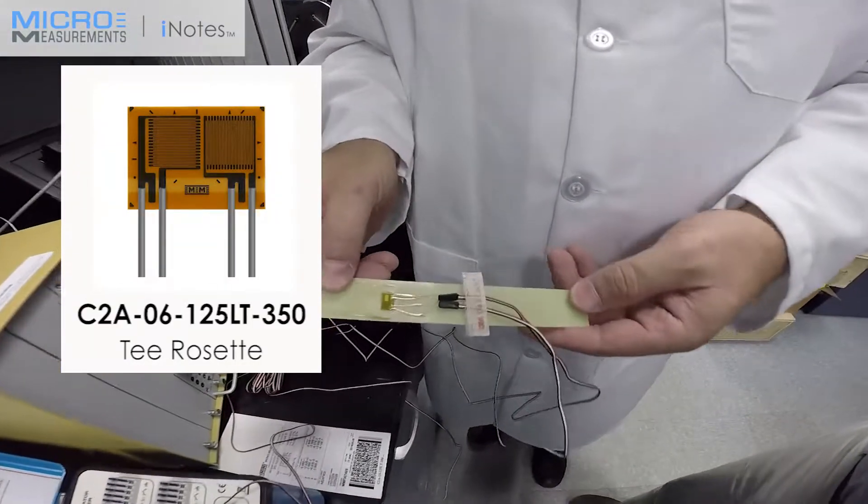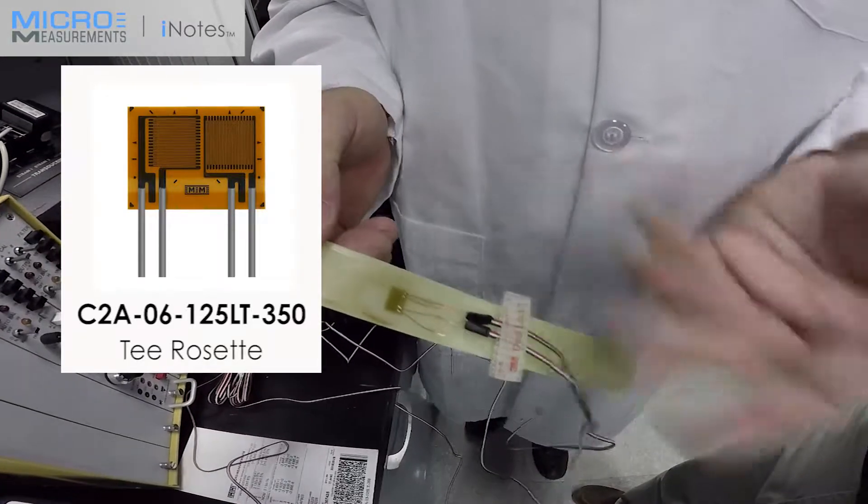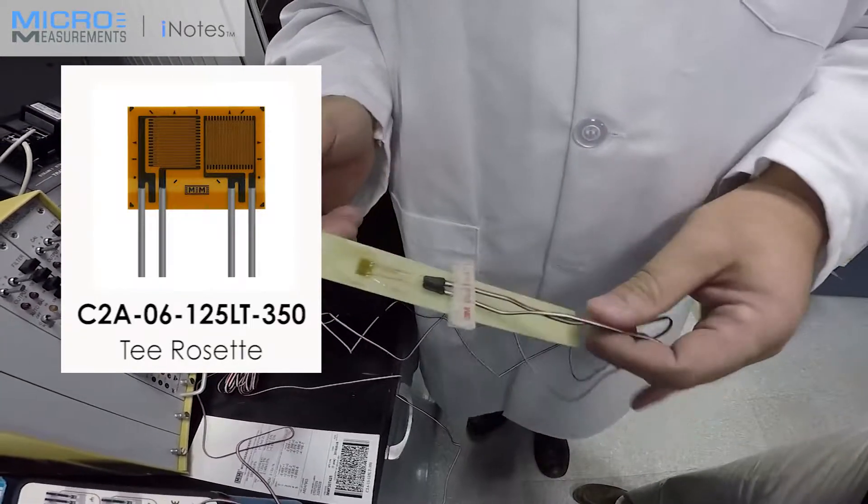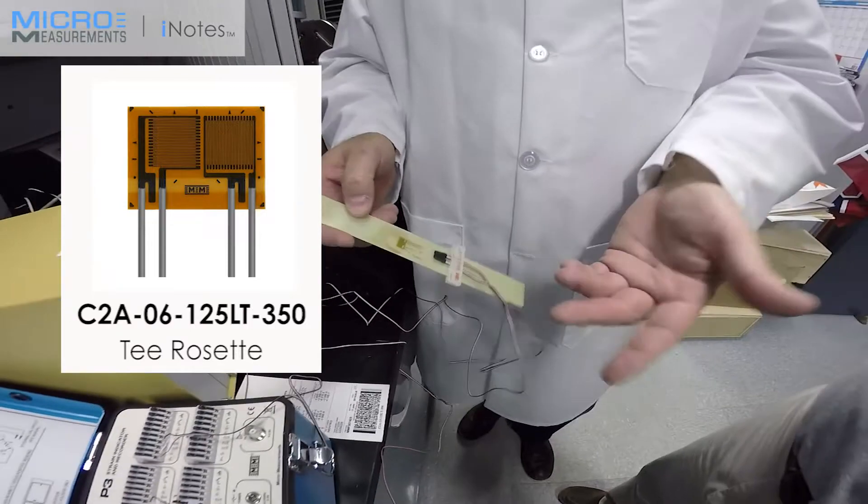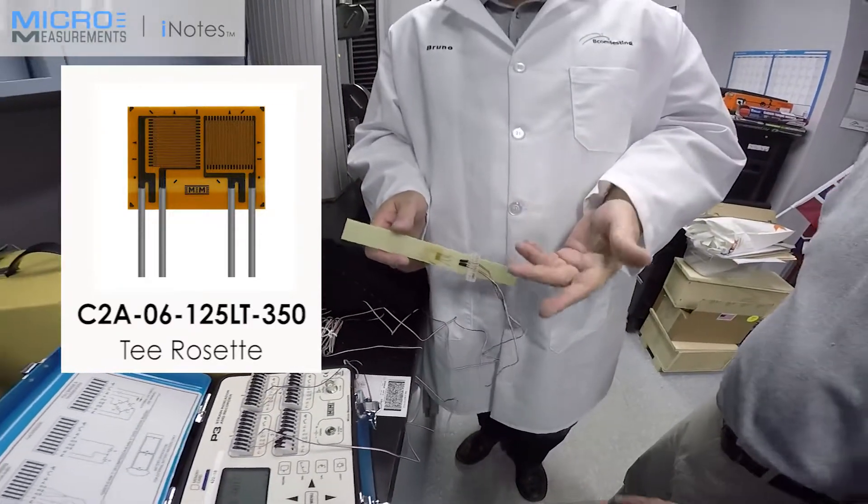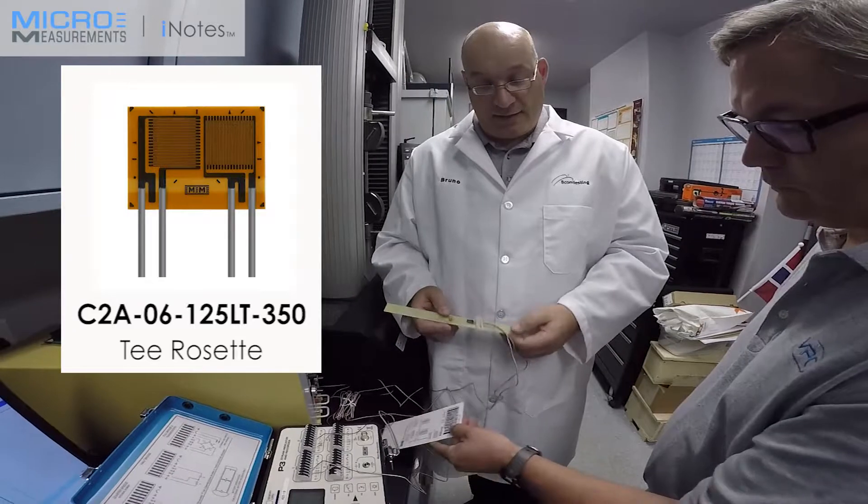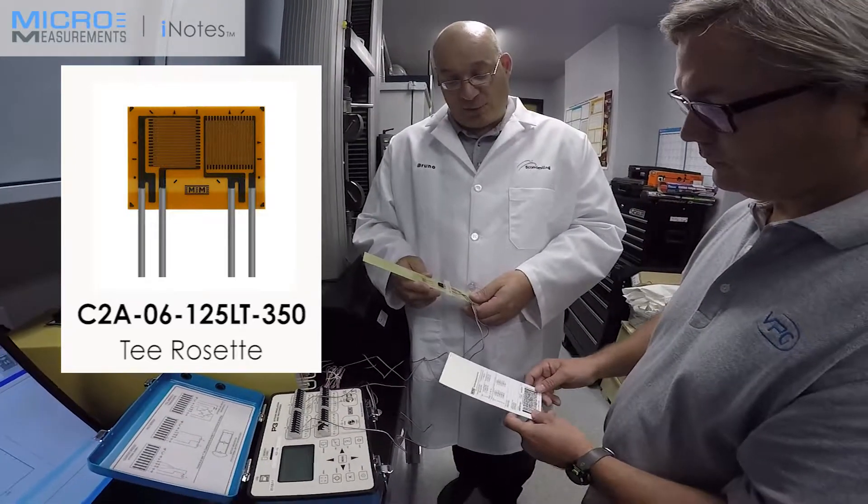Yeah, correct. We use a 125LT in this case, which is already pre-wired as a CTOA gauge provided by Micro-Measurements. The pre-wiring helps us to reduce our labor time where we don't have to actually solder connection and cables to the actual gauge.